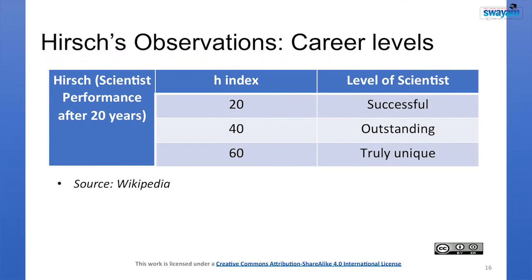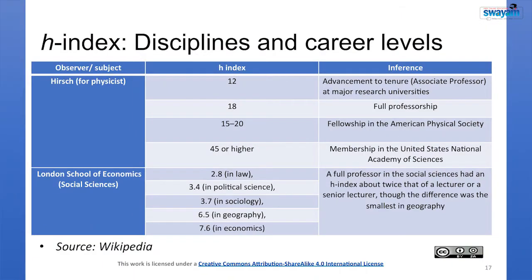H-index gives easy access to the potential or proficiency of a researcher. Hirsch observed scientist performance after 20 years: H-index of 20 indicates a successful scientist; 40 indicates outstanding; 60 indicates truly unique. For physicists specifically, H-index of 12 indicates advancement to tenure, 18 indicates full professorship, 15–20 indicates fellowship in the American Physical Society, and 45 or above indicates membership in the United States National Academy of Science.